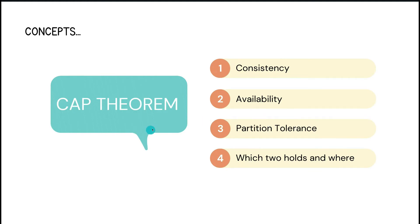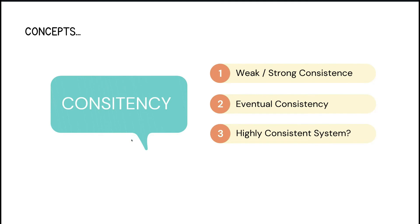Next is the CAP theorem — this is a very very important theorem and it is asked in almost all interviews, at least indirectly. CAP theorem stands for Consistency, Availability, and Partition Tolerance. It says only two of these three can hold true at the same time. You need to understand whether you are making a highly available system or a partition-tolerant system, and how consistency is affected by that trade-off.